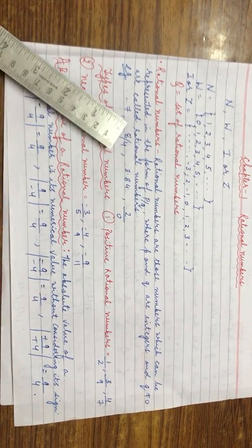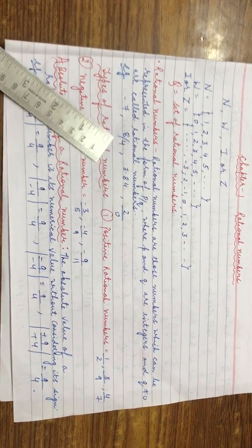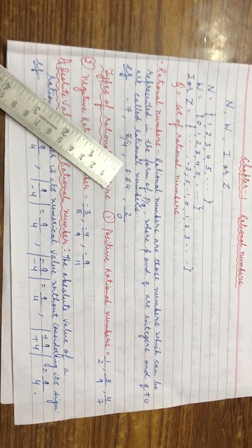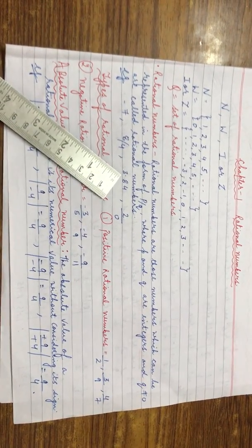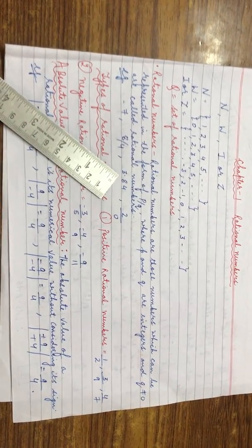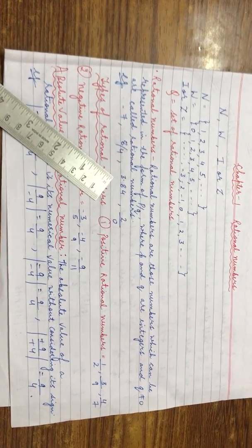Now look at 8 upon 4. Both P and Q are integers and Q is not equal to 0, hence it is a rational number. Now 3.84: If we convert decimal into fraction we will get 384 upon 100. Again the value of Q is not equal to 0, hence it is a rational number.